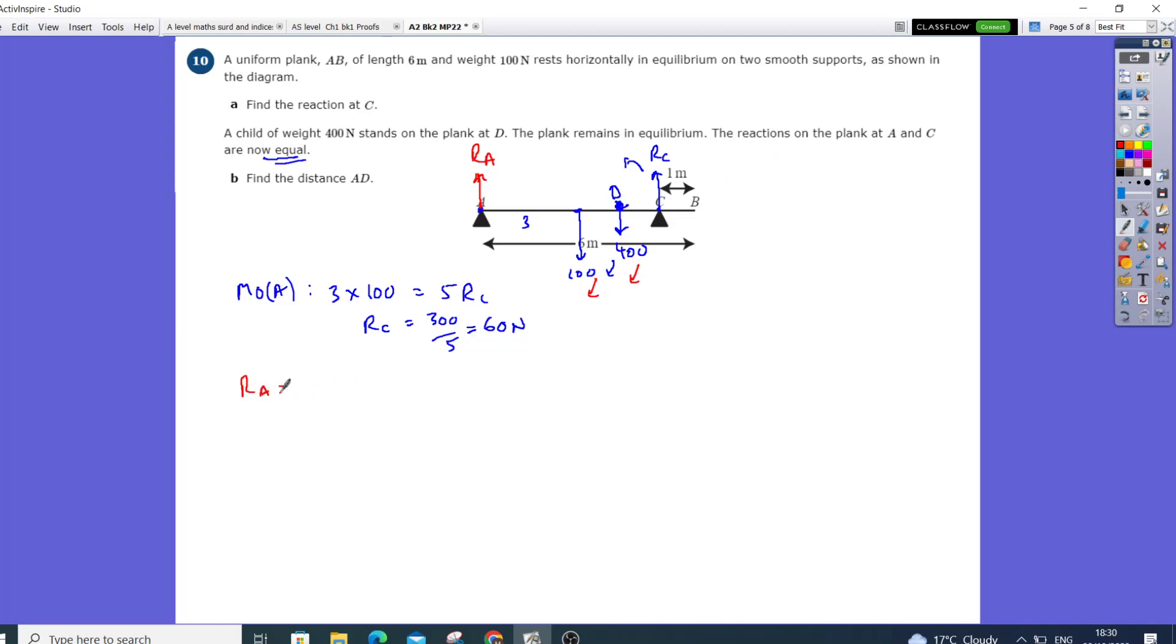So RA equals RC, let's just call it reaction. We've got two reactions going up which are the same, and that's going to equal the weight going down, which is going to be the 100 plus the 400, which makes 500 newtons. So R divided by that will give me 250.